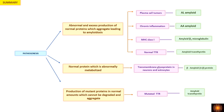To summarize pathogenesis: the three mechanisms are — first, abnormal excess production of normal proteins: plasma cell tumors producing AL amyloid, chronic inflammation producing AA amyloid, class 1 MHC molecules leading to amyloid beta-2 microglobulin, and normal transthyretin producing amyloid transthyretin. Second, normal protein abnormally metabolized: transmembrane glycoprotein in neurons and astrocytes leading to beta amyloid protein. Third, production of mutant protein that cannot be disaggregated: mutant transthyretin producing amyloid transthyretin.